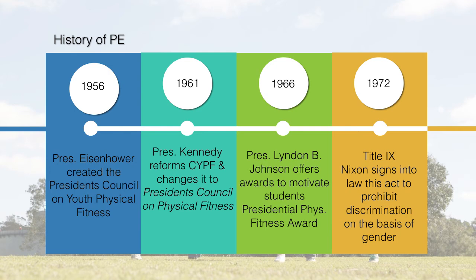Title IX then came into play. Physical education had been largely gender-based — women were mainly involved in gymnastics, dance, and the arts, while men were heavily involved in competitive sports. Title IX said we can no longer discriminate on the basis of gender, requiring exposure of both genders to all activities. Women wanted to participate in the same activities as men but weren't allowed to. Title IX helped overcome that and is why we now have co-ed programs.